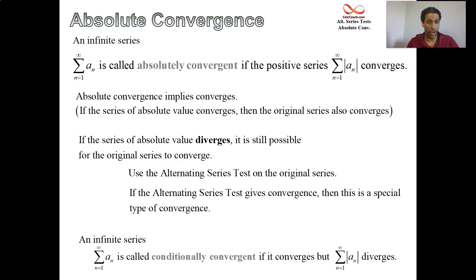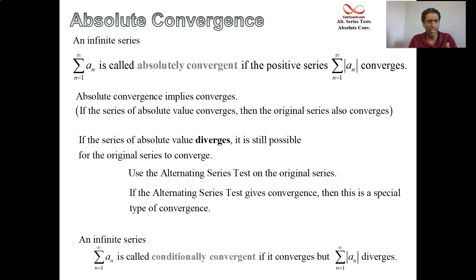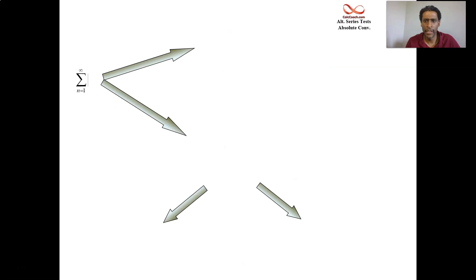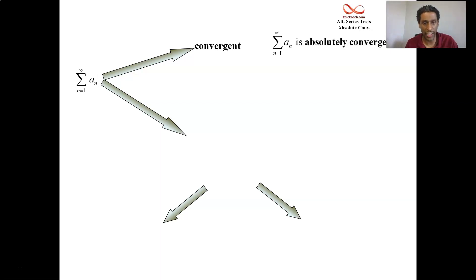I have a nice flowchart on the next slide that basically gives you exactly the flow about how you should attack a problem when asked absolute convergence versus conditional convergence versus divergence. Here's the flowchart: you start off by taking the absolute value of all the terms. If that's convergent, you're done — that's the definition of absolute convergence and thus convergence.